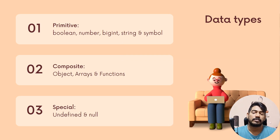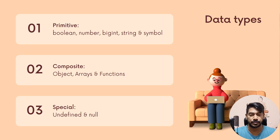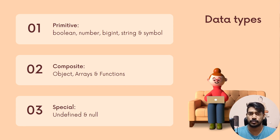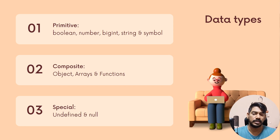Primitive types include: boolean — true or false, yes or no, 0 or 1. Then number. In Java you have integer and float, but in JavaScript it's all just number. There's also BigInt, which was introduced in a later JavaScript version — ES6 or later.